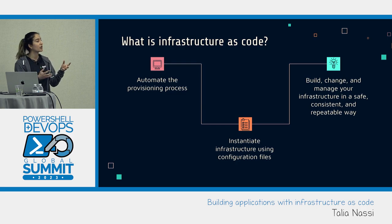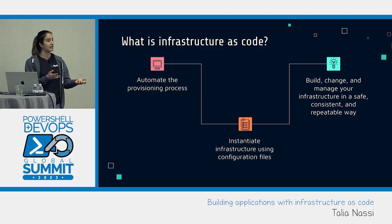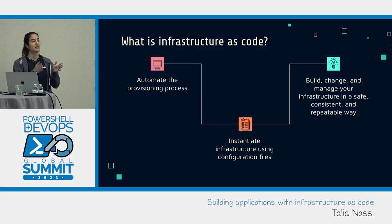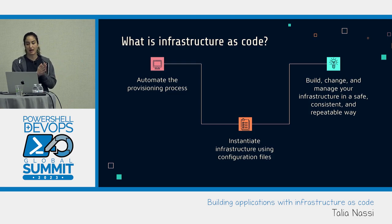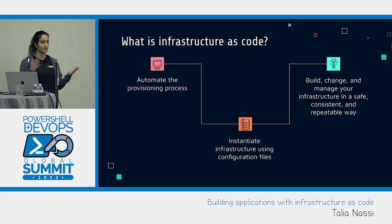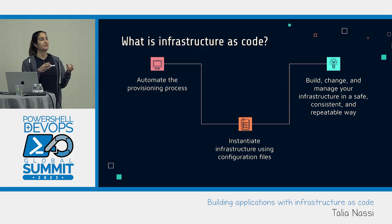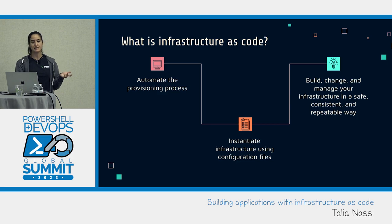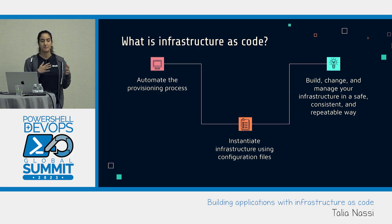In this configuration file, you have one place with all the steps to set up your application, and you can reuse it whenever you need. At the core, it allows you to treat your infrastructure as code. What do you do with code if something doesn't work? You roll it back to a different version. So you have this one place with a consistent view of your application, and if something goes wrong after you push changes, you can revert and roll back. This gives you the flexibility to build, change, and manage your infrastructure in a safe and repeatable way.